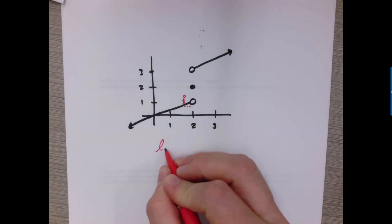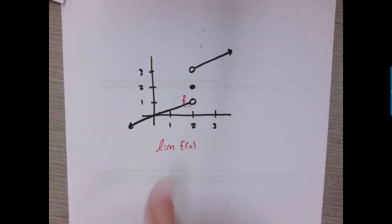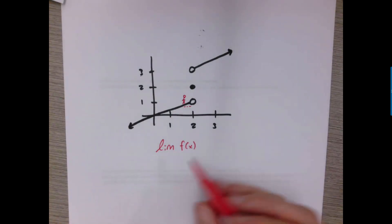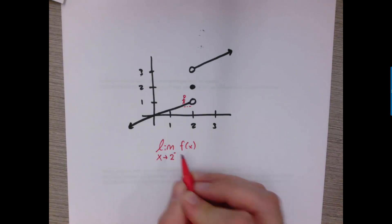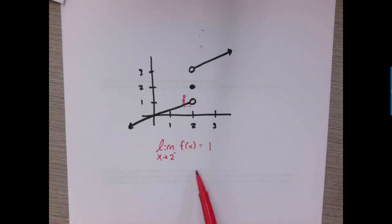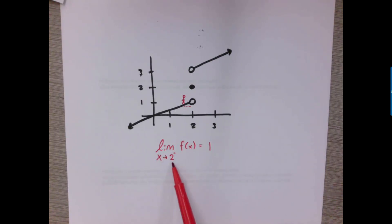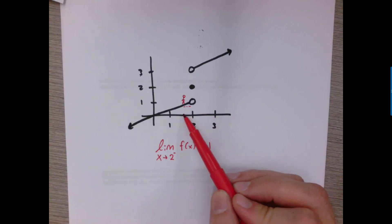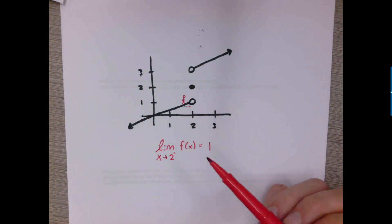The way you'd write that is: the limit of f of x — because f of x is the notation that describes the y value for this function — so the limit of the y values as x is approaching 2, and that minus sign means from the left-hand side, is equal to 1. The way you would describe this in words is: the limit of f of x as x approaches 2 from the left-hand side is equal to 1. The idea is you're describing where the y values are headed toward as your x values move in a particular direction.